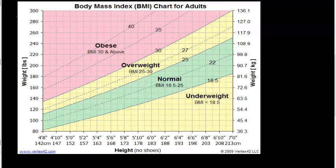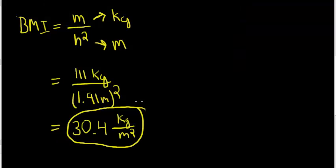This in particular highlights the limitation of the measurement, as the type of mass is not accounted for. We know that Tim Tebow, as a football player, most likely has high amounts of muscle mass compared to fat mass. So this will cause his BMI to be higher than expected.